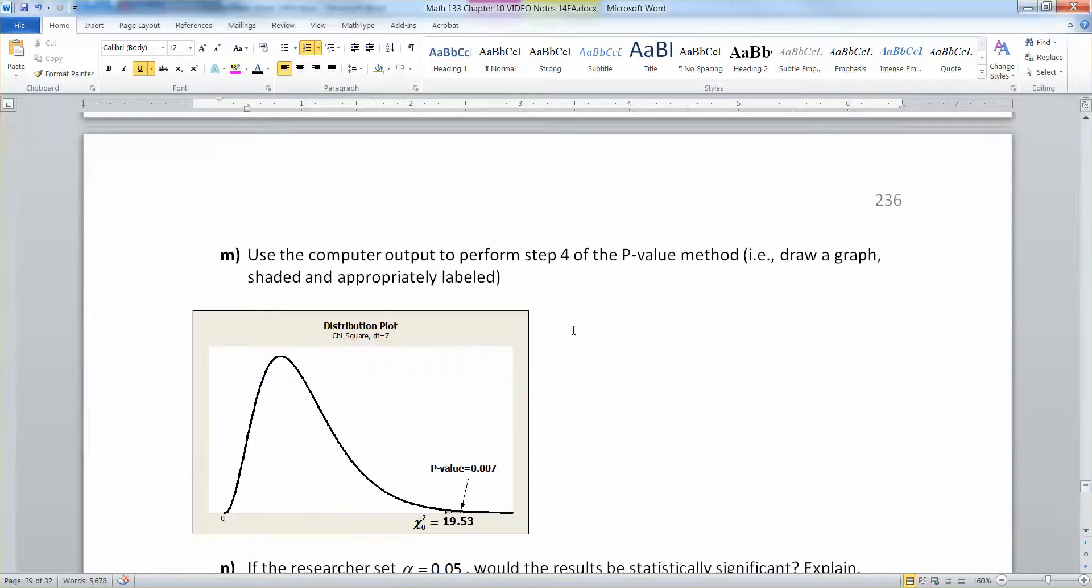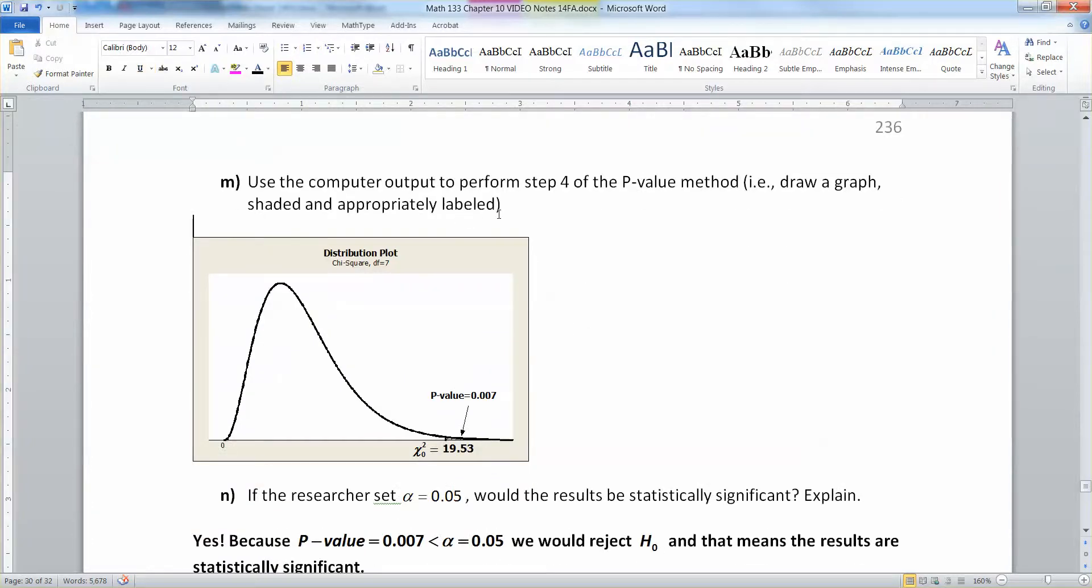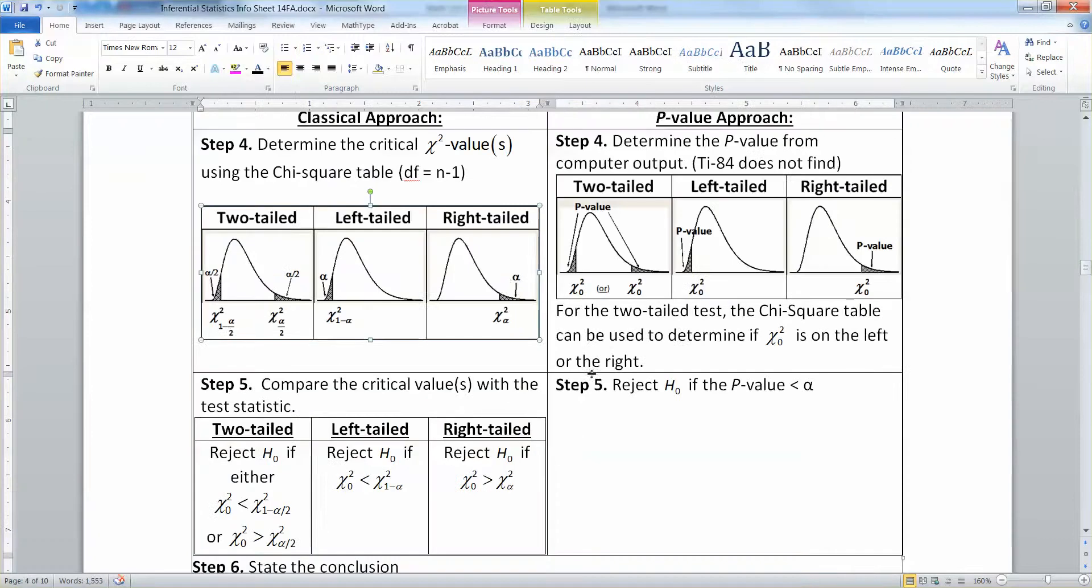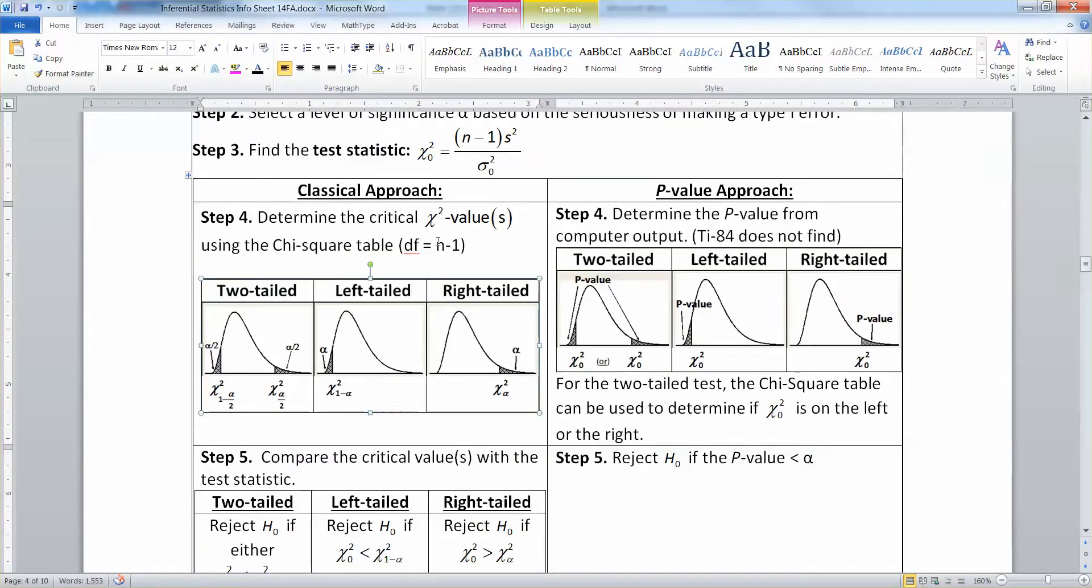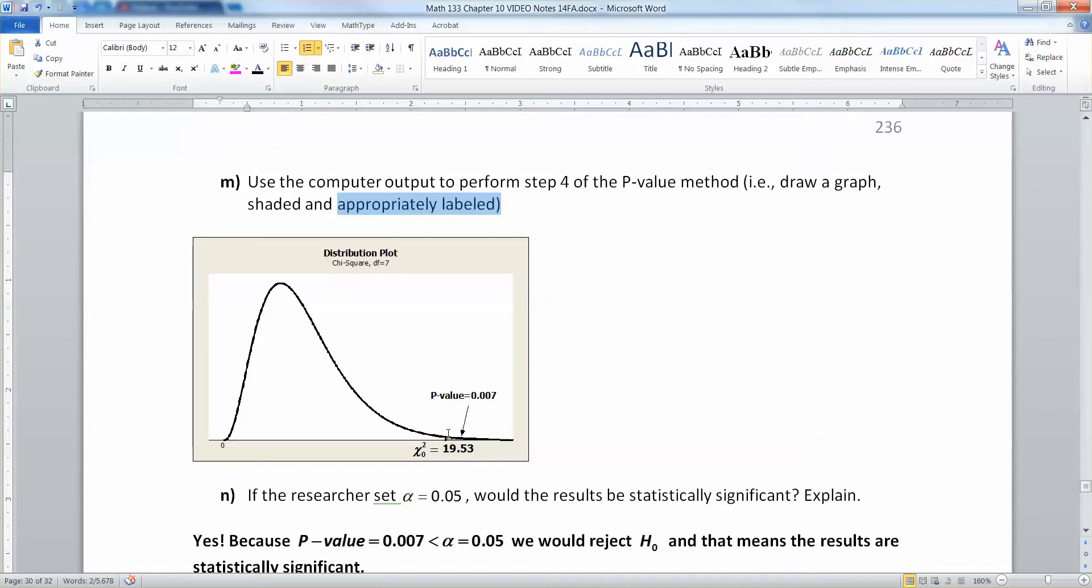So now we're going to label that on this graph here. So it's a right-tailed test. If you're doing a right-tailed test, then you're doing the p-value method, so one of these three graphs. And since you're doing a right-tailed test, you want the one on the far right. So your chi-zero-squared stat is your vertical bar at 19.53. And then the area in that tail is very small, but it's 0.007.